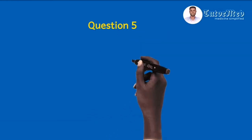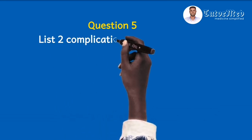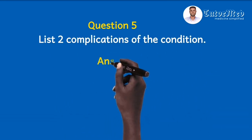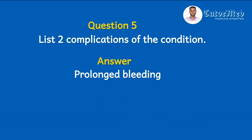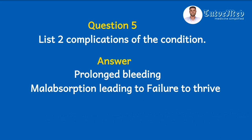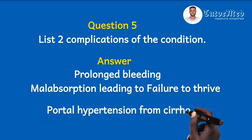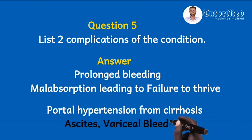Question five: list two complications of the condition. Because of vitamin K deficiency and other clotting factor deficiencies, the patient may have prolonged bleeding. Because of the absence of bile, the patient will have malabsorption leading to failure to thrive or malnutrition. Due to liver failure, the patient may develop cirrhosis causing portal hypertension, which manifests as ascites, variceal bleeding, and so on.